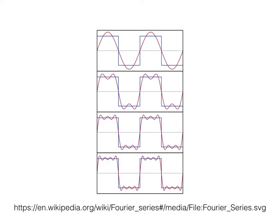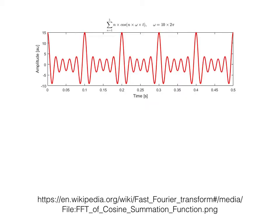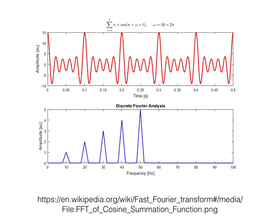Every sound breaks down into a collection of sine waves, each with its own frequency, amplitude, and phase. This is the Fourier theorem. Normally, we represent our audio signal as amplitude over time. Sometimes we like the frequency information as well.